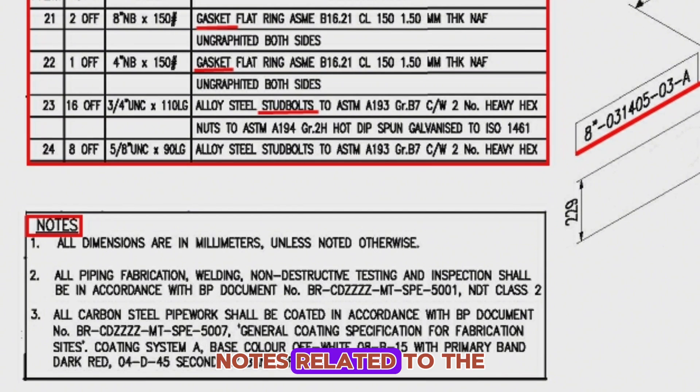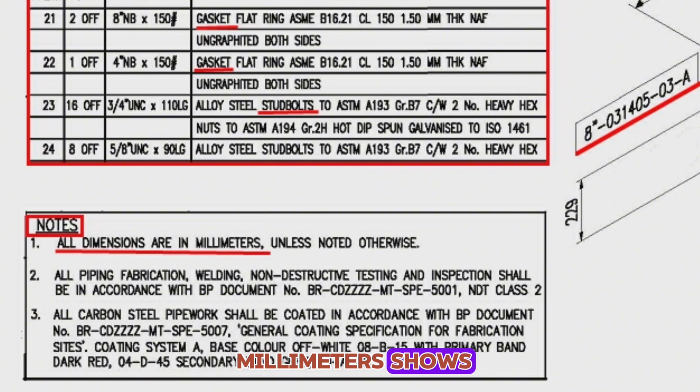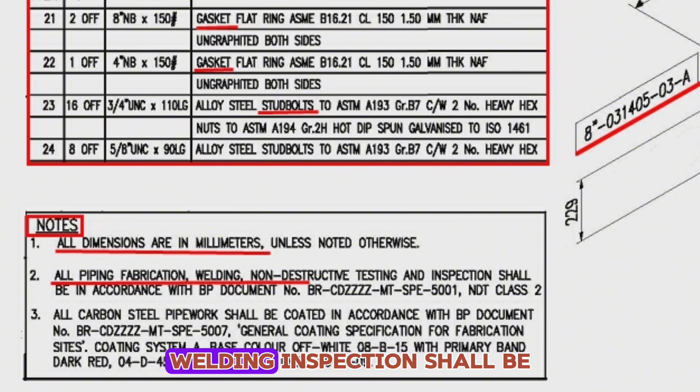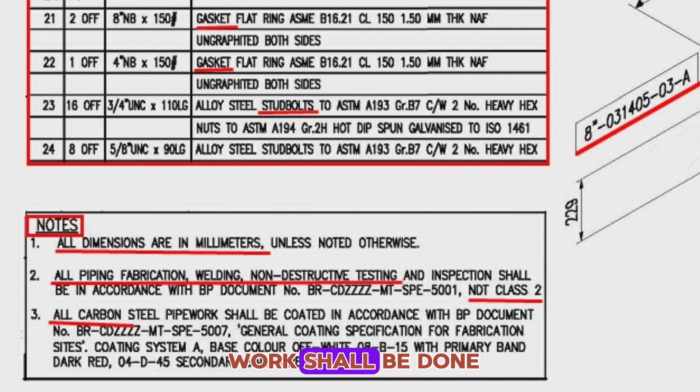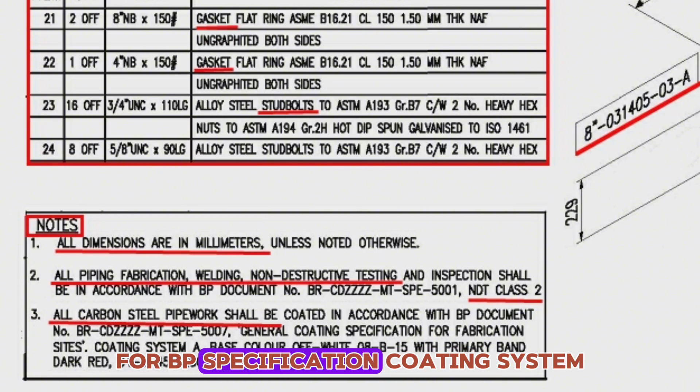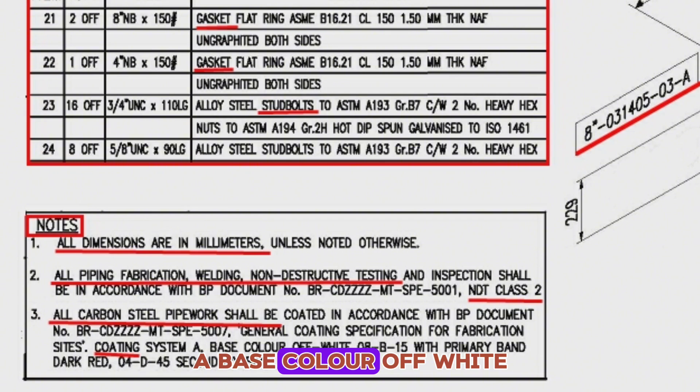Notes related to the pipeline are shown in this table. For example, all dimensions in millimeters are shown. All piping fabrication welding inspection shall be done NDT class 2. All carbon steel pipework shall be done for BP specification coding system A, base color off-white.